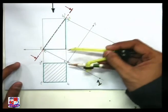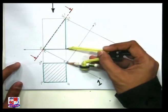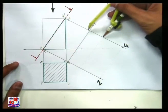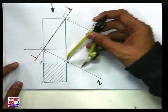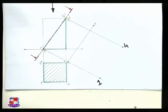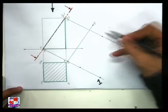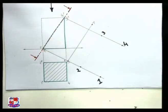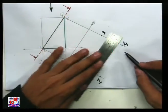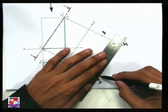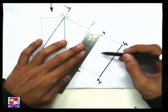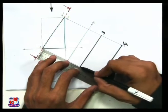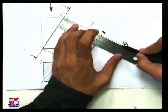For points two and three, measure the distance from XY line to point number two and XY line to point number three — both will be the same. So we get two more points here: point number two and point number three. Now join all four points with a straight line and that would be a rectangle — rectangle one, two, three, four.